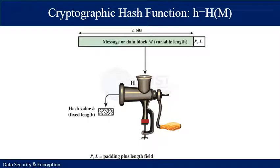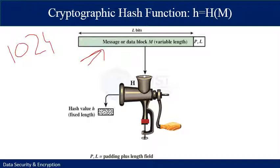This figure depicts the general operation of a cryptographic hash function. Typically the input is padded out to an integer multiple of some fixed length. In many cases the length of padding is 10 to 24 bits, and the padding includes the value of the length of the original message in bits. This padding length is a security measure to increase the difficulty for an attacker to produce an alternative message with the same hash value. The original input M of length L bits is padded and passed to the hash function, which produces a hash value of fixed length.